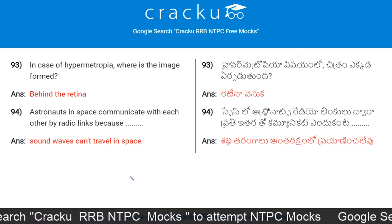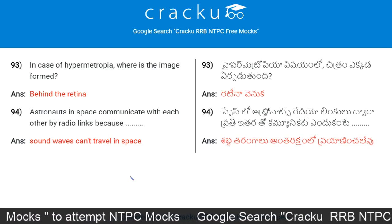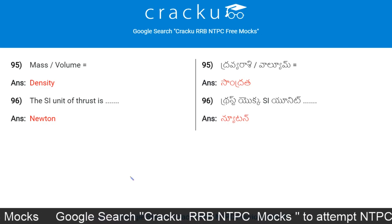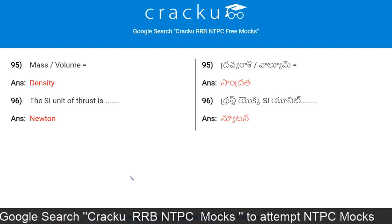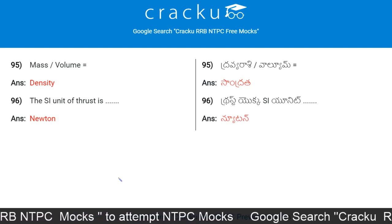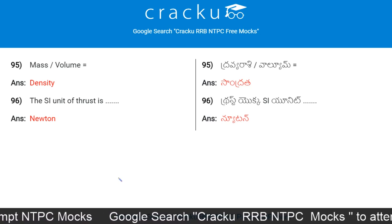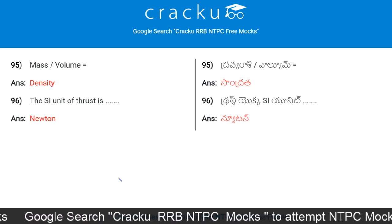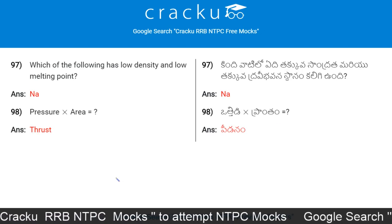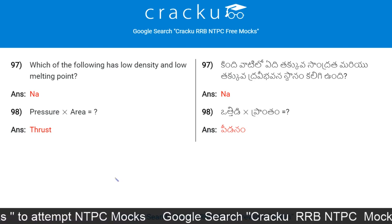Astronauts in space communicate with each other by radio links because sound waves cannot travel in space. Mass divided by volume is equal to density. The SI unit of thrust is Newton. Which of the following has low density and low melting point? Sodium (Na).